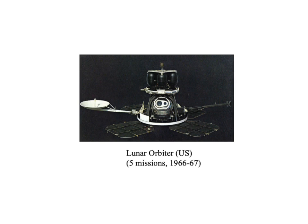A nice example of an orbiter mission is the Lunar Orbiter mission of the mid-1960s. There were several of these orbiting spacecraft in orbit around the moon, and over a period of a couple of years, they sent back thousands upon thousands of high-resolution images of the lunar surface from close range.